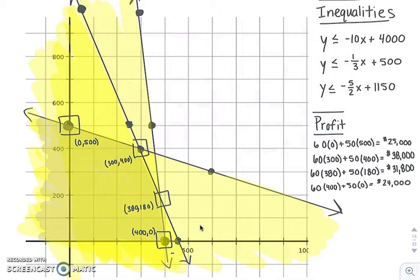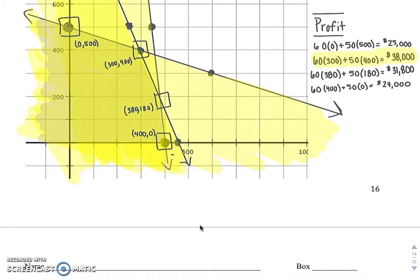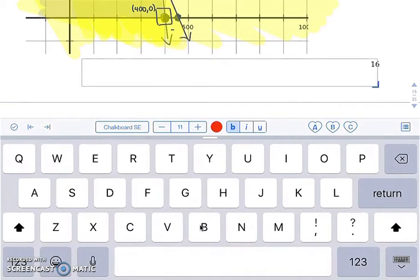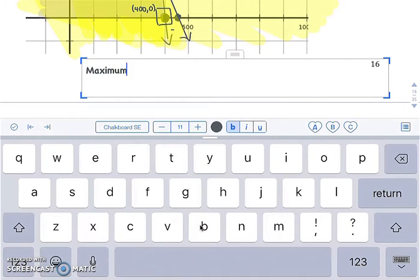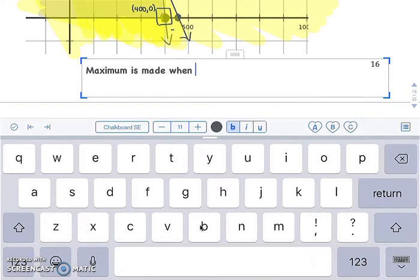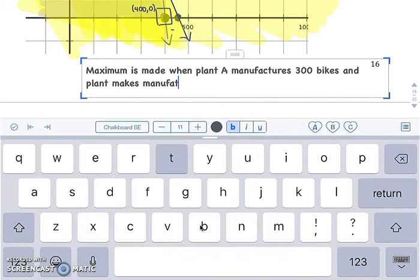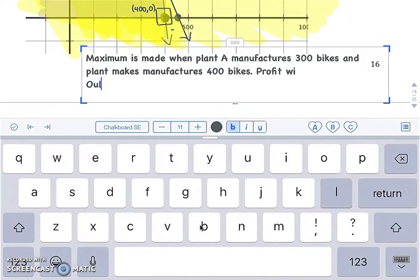So based off of our profit, the maximum profit we're going to make is from this equation here. So as your answer, I'm just going to write that we're going to get the maximum profit when plant A manufactures 300 bikes and plant B makes or manufactures 400 bikes. Profit would be $38,000.